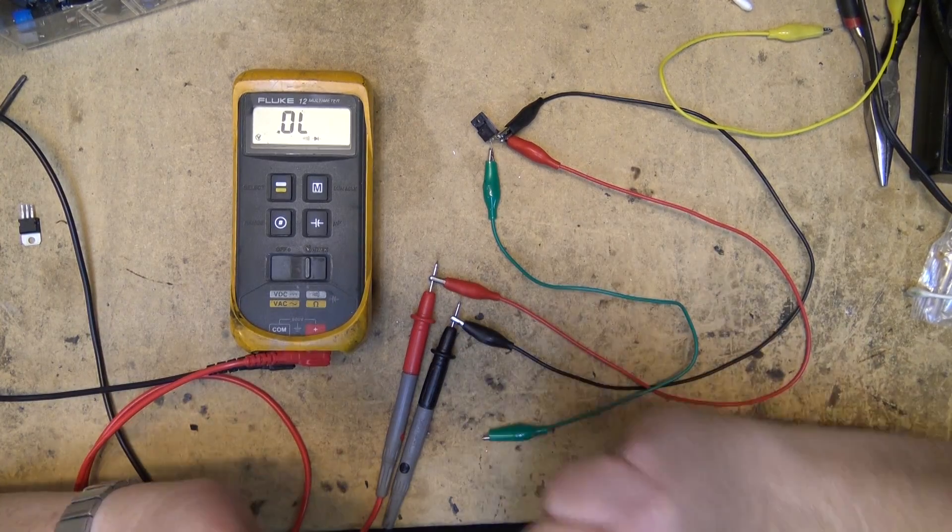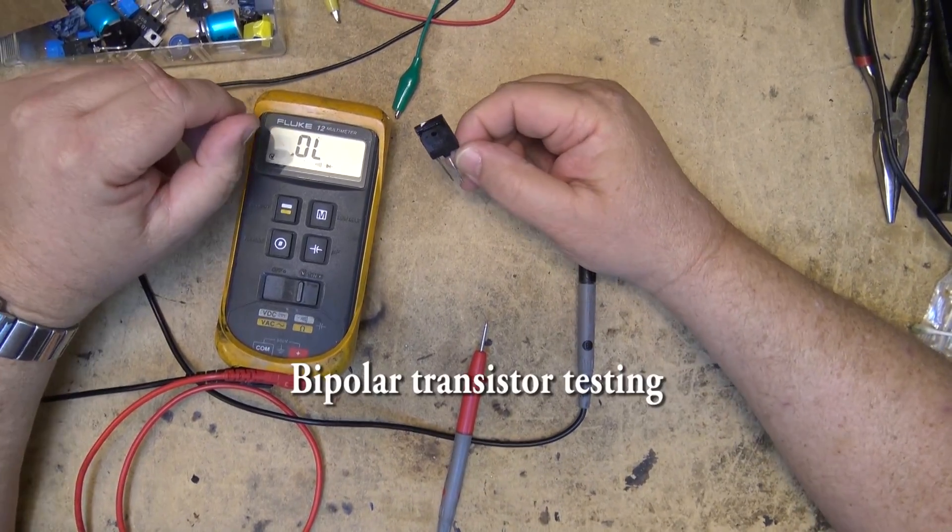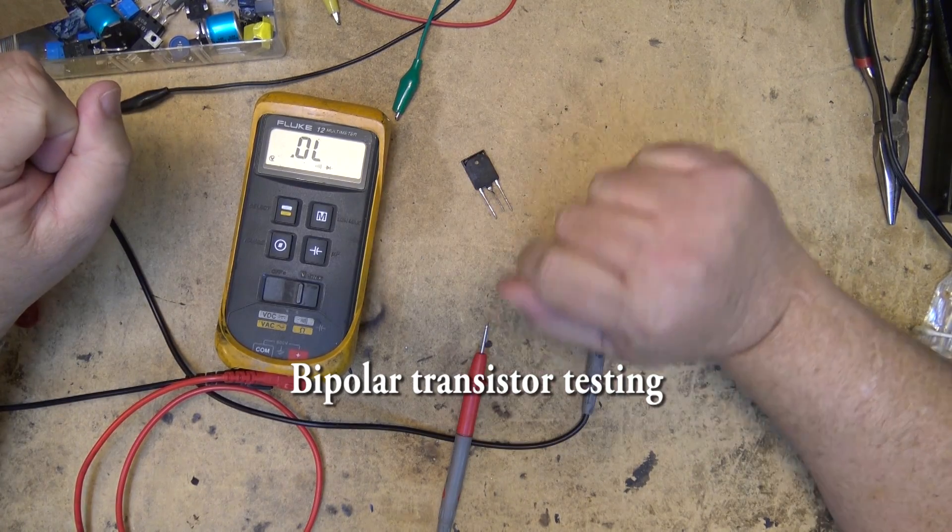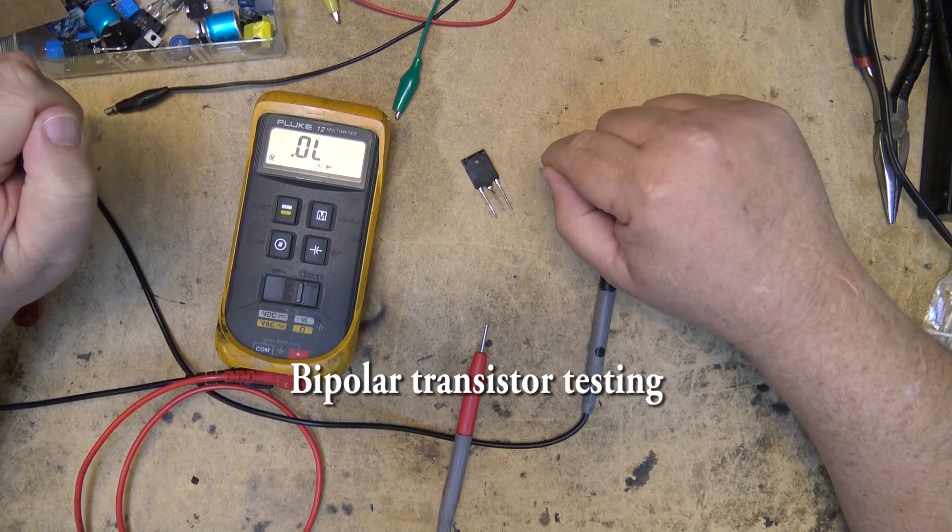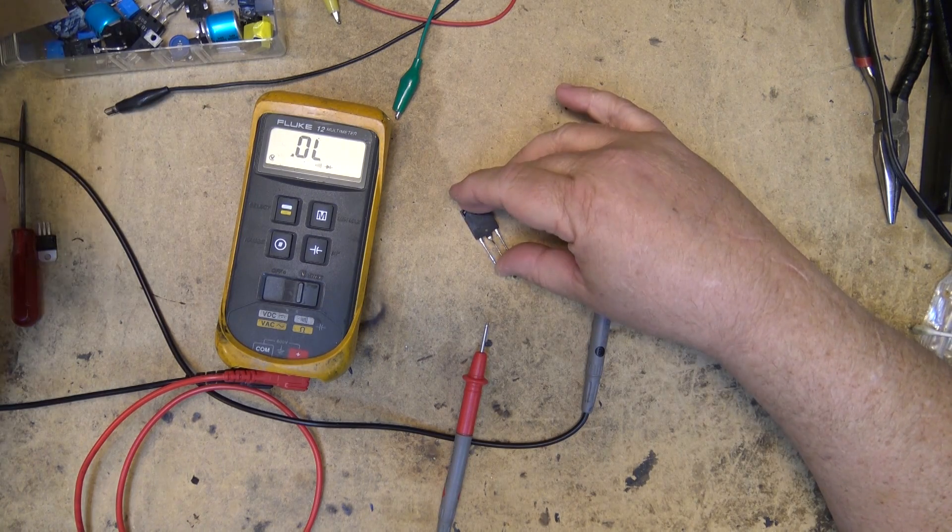Next we'll move over to a bipolar transistor. Now a bipolar transistor is essentially just two diodes, emitter to base and collector to base, depending on the polarity of the transistor.